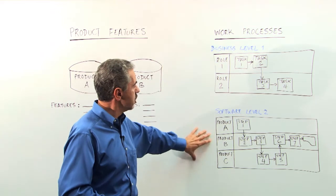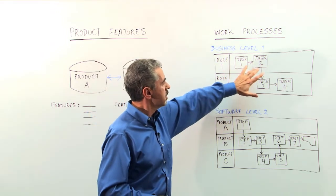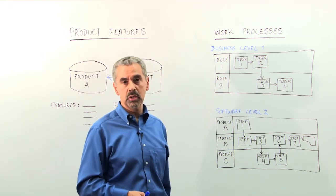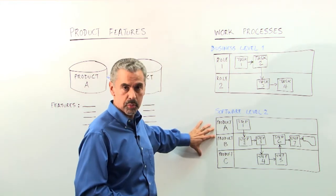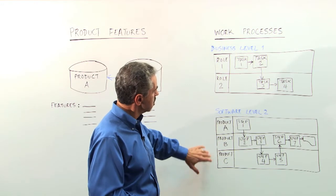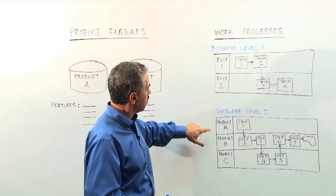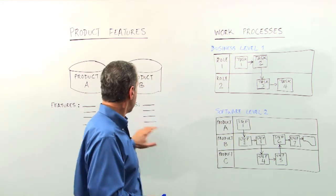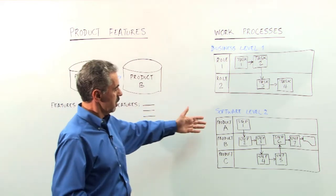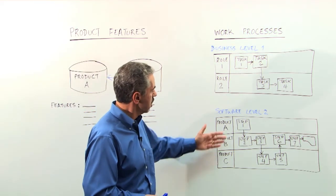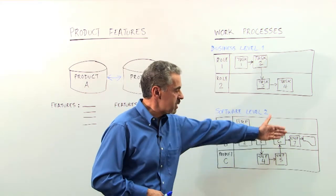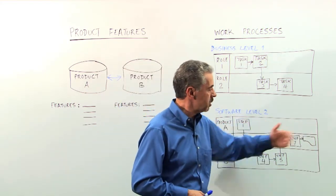But then what we do is we take the various tasks and the deliverables that you need to create, and we create a software level two work process where now these swim lanes represent products. So we had product A and product B here, but obviously you may have more than that. So now we have the products, and we execute a series of steps in order to create a deliverable.